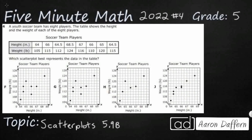The only trick, if you want to call it that, is that our height is on the x-axis and the weight is on the y-axis. They're giving us ordered pairs, but vertically. So this first one we need to read like this: an x of 64 and a y of 105. The second one is an x of 66 and a y of 115. Our x's are going to be on the top row, and our y's are going to be on the bottom row.